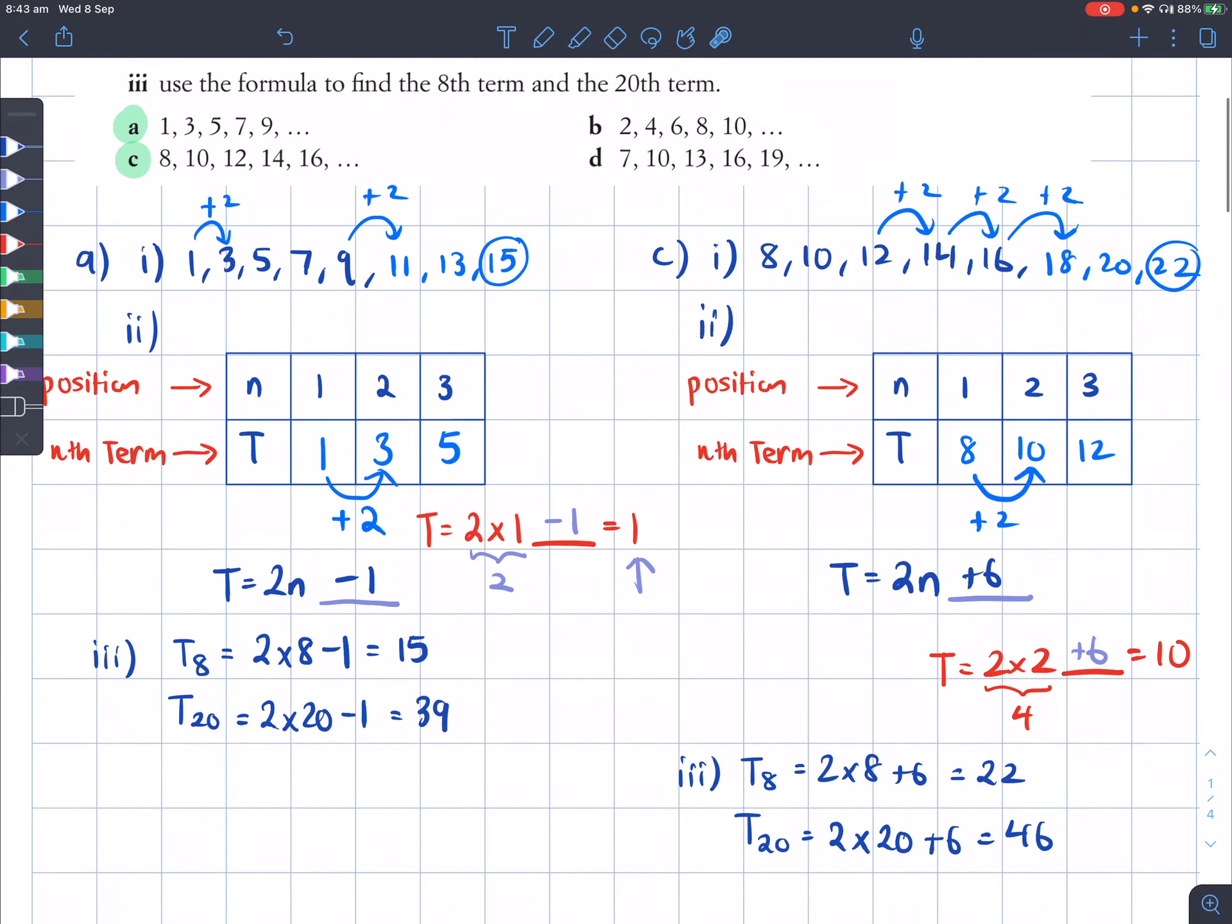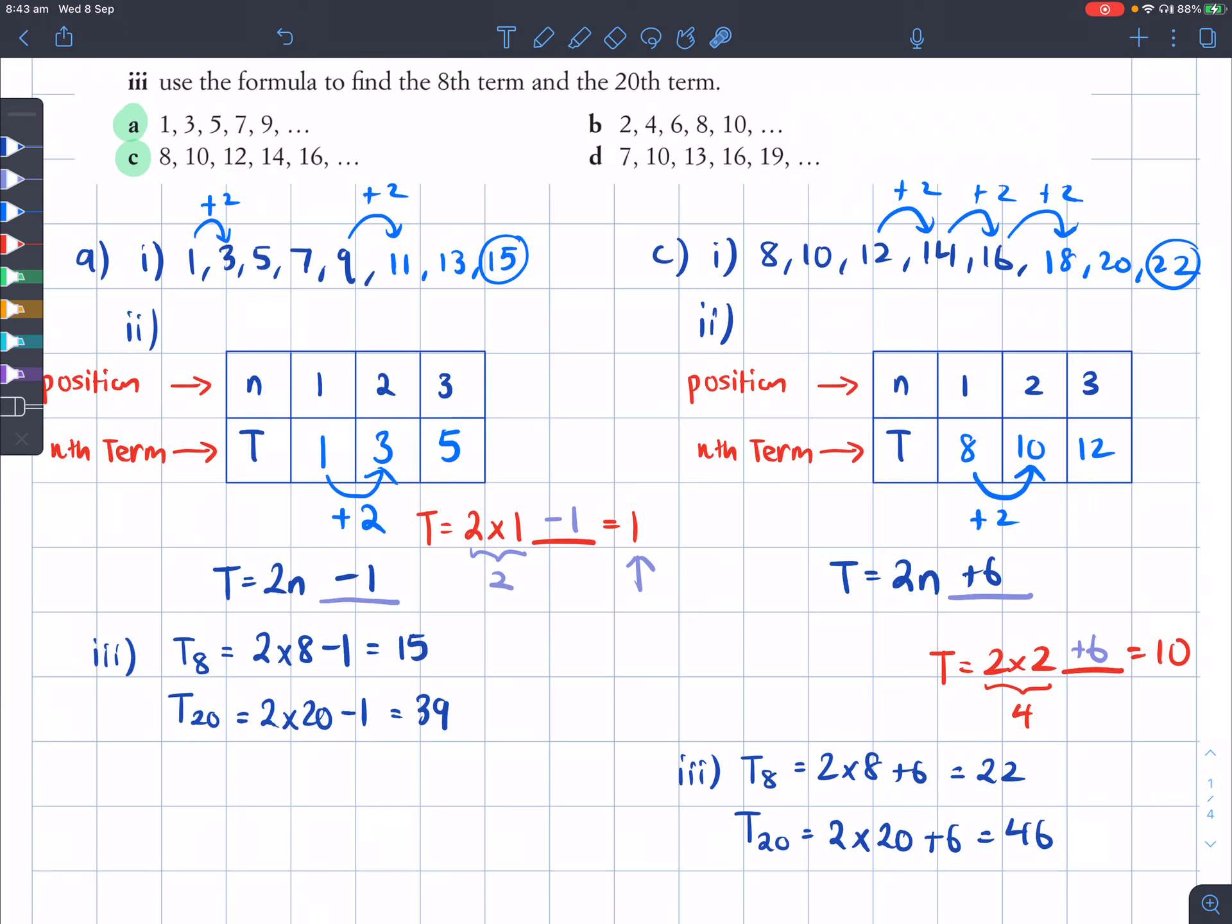So now that I've done a and c, you can do b and d. b goes up by 2 and d goes up by 3. So when you do this part of the question, part 2, for this part of the question, you will get something like T equals 3n plus or minus something. You just got to find that something. Thank you.